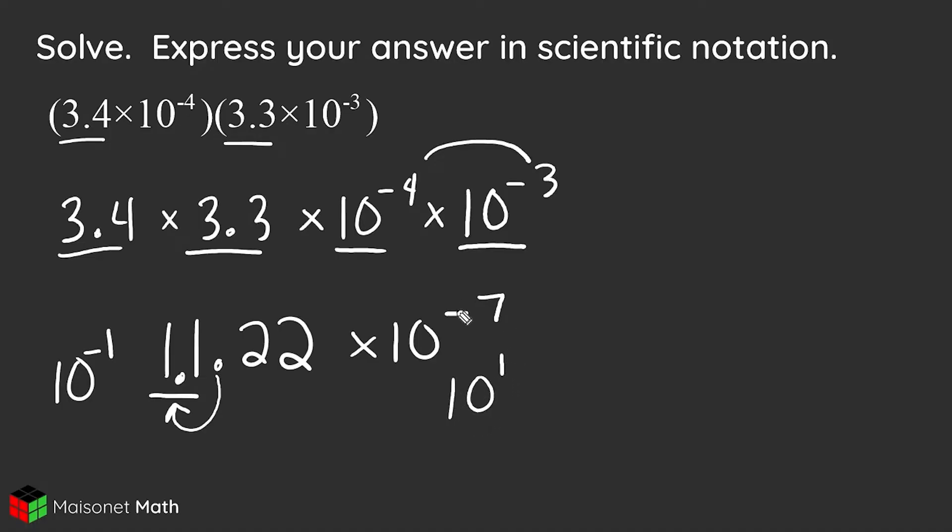So if we take negative 7 and we increase it by 1, that would give us negative 6. So we're going to rewrite this answer as 1.122 times 10 to the negative 6 power.